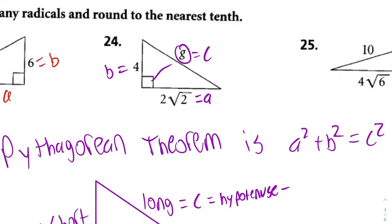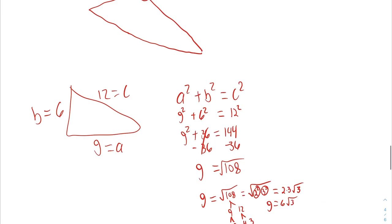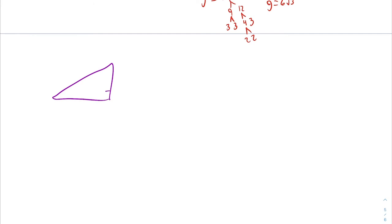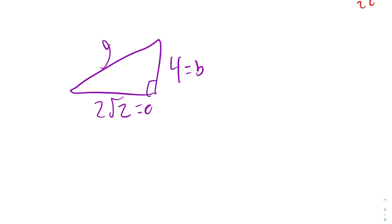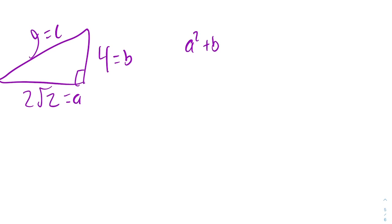2 square root of 2, 4, and G. G, 2 square root of 2, 4. It doesn't matter the way your triangle looks just as long as you put things in the right spot. So this is B, A, C. You write the formula down. A squared plus B squared equals C squared.